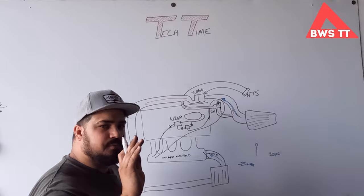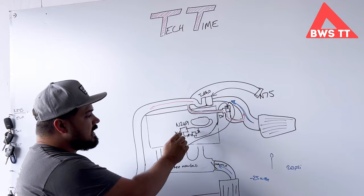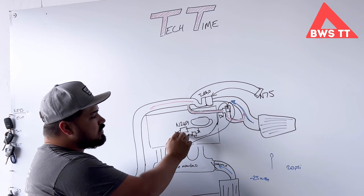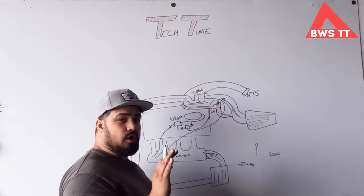But if that fails, the ECU can tell that the turbo hasn't responded the way that it was expecting. It can utilize the N249 to open the diverter valve and to stop boost being generated. So that could prevent a massive overboost situation, which could blow the car.